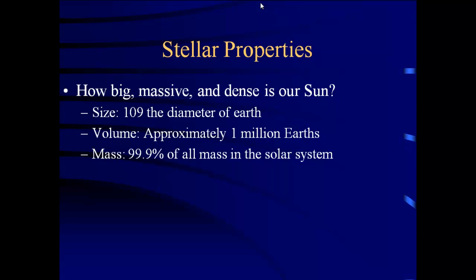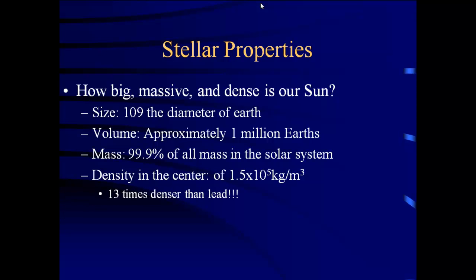If you were to go to the center of the sun, the density is 1.5 × 10⁵ kilograms per cubic meter. One of the most dense substances we have on Earth is lead, and the center of the sun is about 13 times denser than lead — a very dense central region. To give you an idea: two dice taken from the center of the sun would each weigh two pounds.